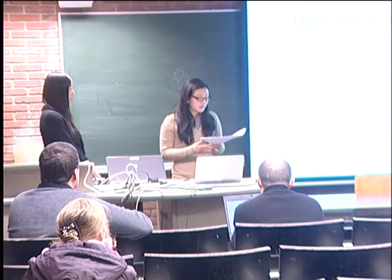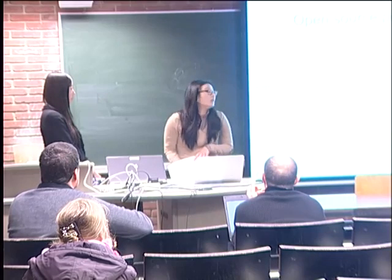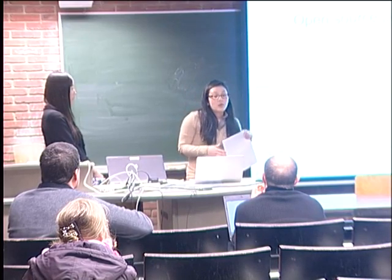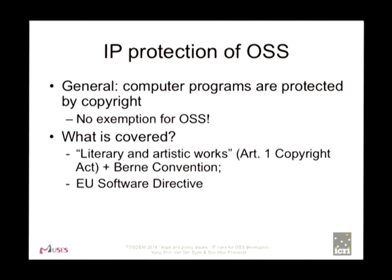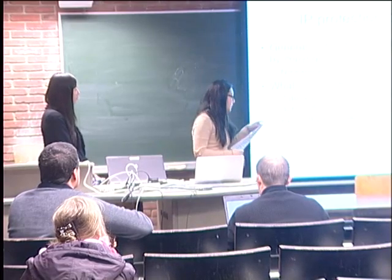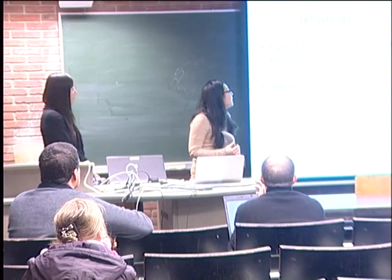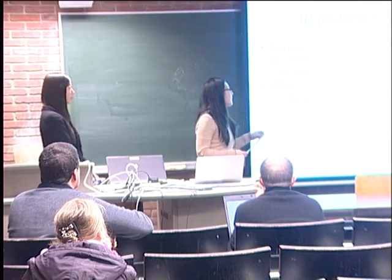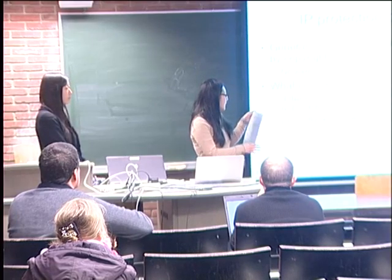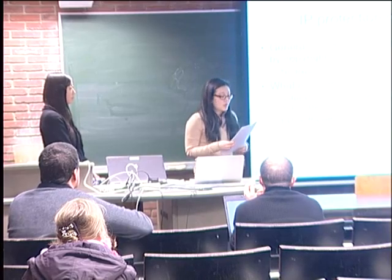The problem consists of two elements: when do you have an IP risk, and how can you protect yourself? First I will explain when you will have an infringement. I will explain which kinds of intellectual property rights should be taken into account when dealing with open source projects. The most important are copyright and patent law. First I will tell you something about copyrights and how you can know if the source code of someone else is protected by copyrights.